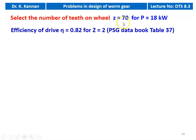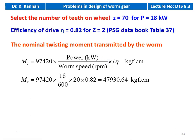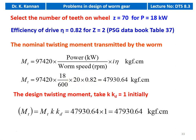For i equal to 20, we take number of starts equal to 2 from the table. We select the number of teeth Z equal to 70 for power equal to 18 kW. Efficiency of the drive eta = 0.82 for Z = 2 from table 37, PSG data book. The nominal twisting moment MT = 97,420 × 18 / (600 × 20 × 0.80) = 47,930.64 kgf·cm. Taking KKD equal to 1, the design twisting moment MT is also 47,930.64 kgf·cm.